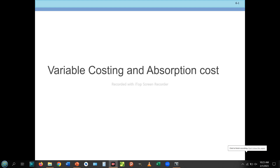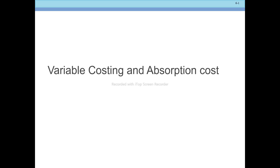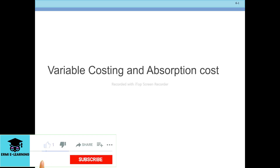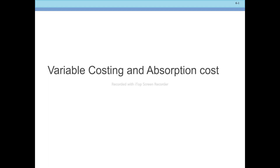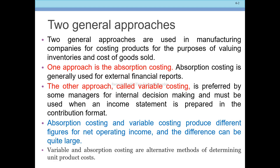Welcome to the army e-learning channel. Today we'll watch the easy lesson about variable costing and absorption costing. This is from cost and management accounting. Please subscribe to the channel. We have two general approaches used in the manufacturing company for costing products for the purpose of valuing inventory or cost of goods sold: absorption costing and variable costing.